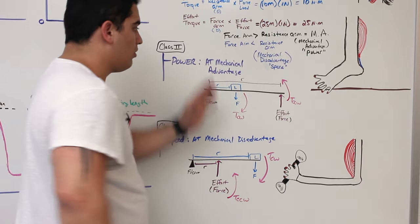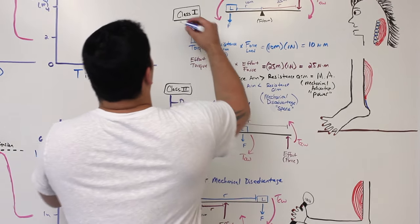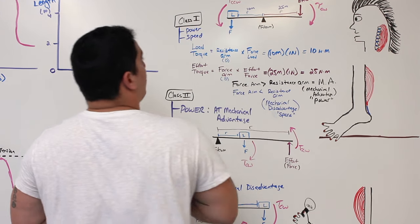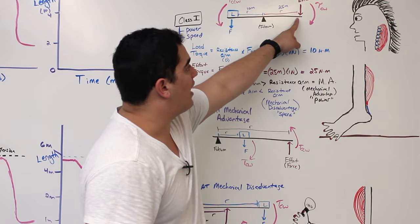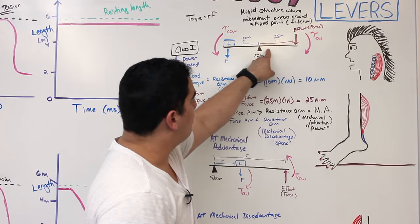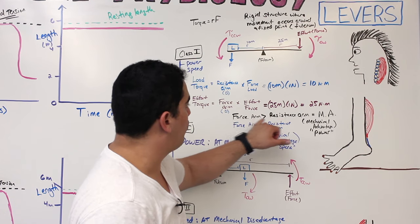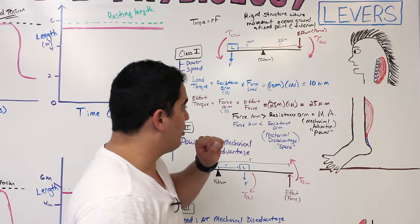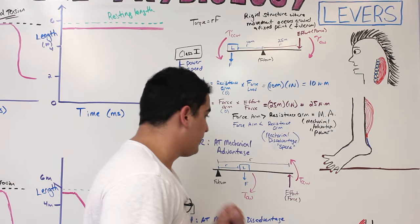To summarize all three classes: Class I levers can exhibit both power and speed, depending on whether the force arm is greater or less than the resistance arm — they can be at either mechanical advantage or disadvantage. Class II levers are always at mechanical advantage (power). Class III levers are always at mechanical disadvantage (speed). Class I and II levers are rare in the body; Class III is the most common.